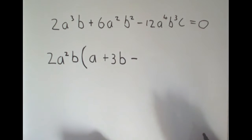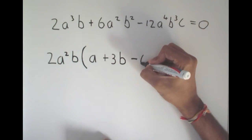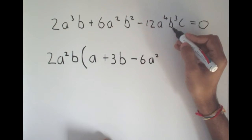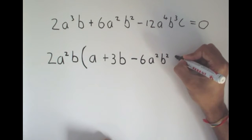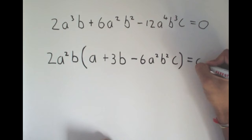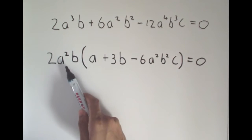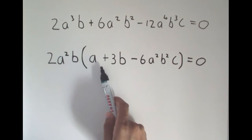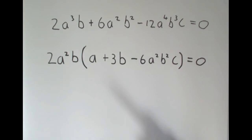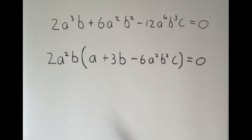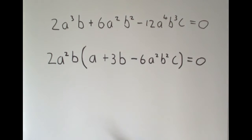Now I put my minus in. I have a 12, I took out a 2, so I am left with 6. I had an a⁴, I took out an a², so I am left with a². I had a b³, I took out a b, so I am left with b². And I still have that c. I close my bracket, equal to 0. We have not changed the value of the expression because we divided out the common factor and left it in front to be multiplied back in. So, all we have done is taken 3 terms and made it 1 term. If we can't factorize anything else inside the bracket, we are done. This is fully factorized.